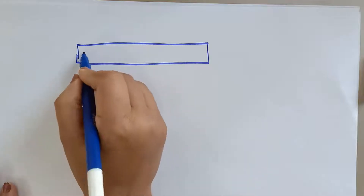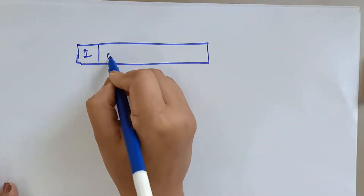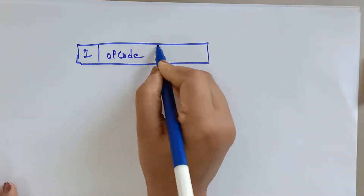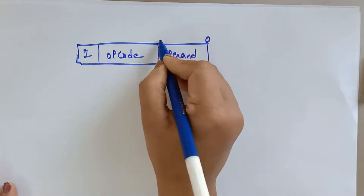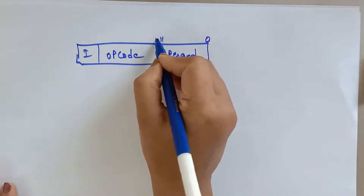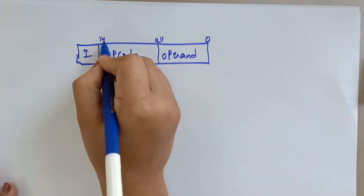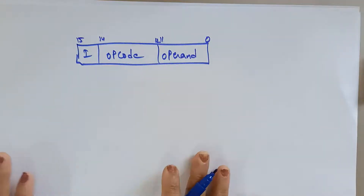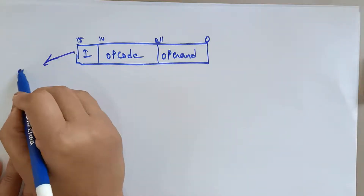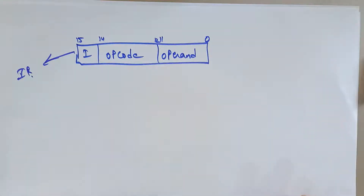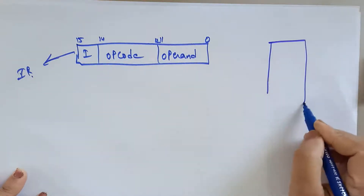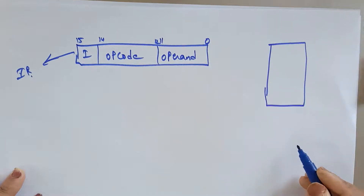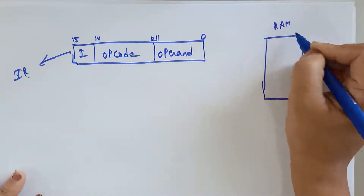You already know the instruction register format: opcode and operand. The instruction register holds the opcode and operand which are fetched from memory — specifically from RAM.